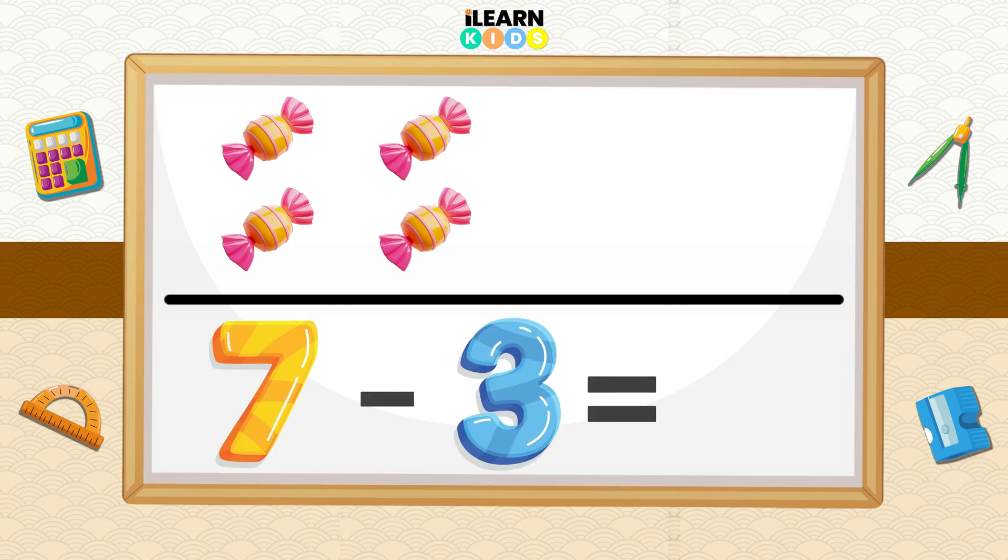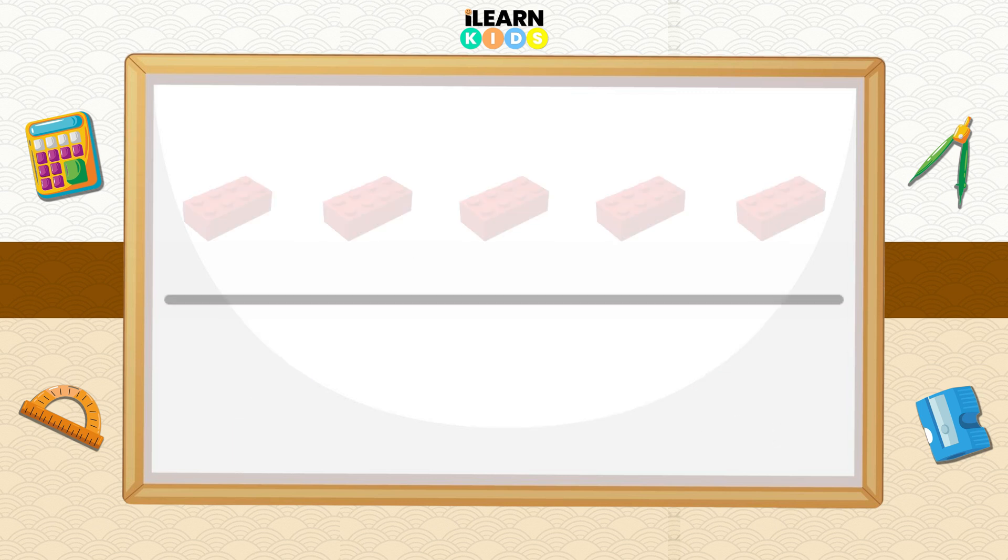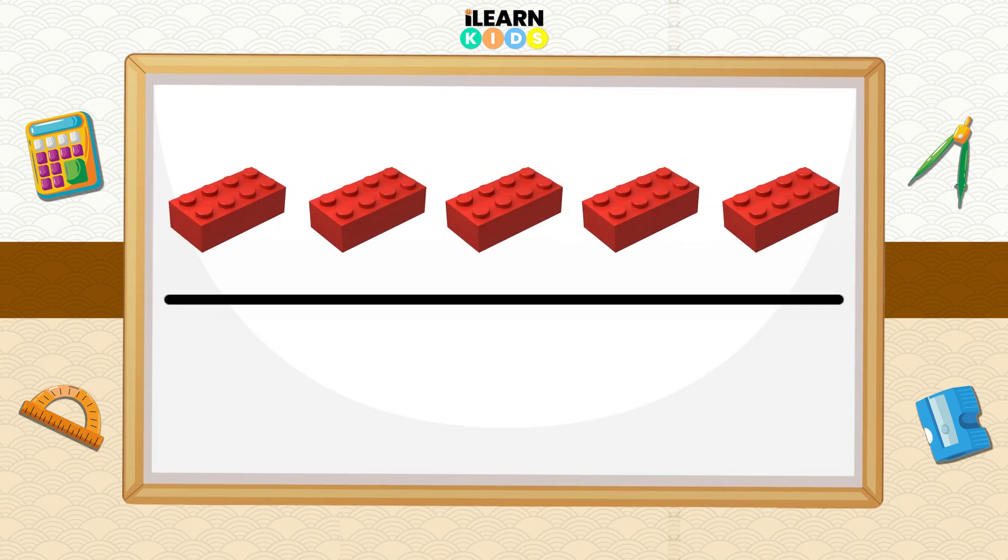Great! Four candies. And lastly, we have five building blocks and we take away two. How many will we have left? Can we count this together? One, two, three. Great, you're right!